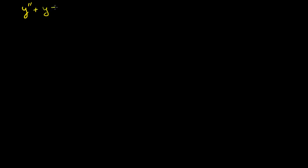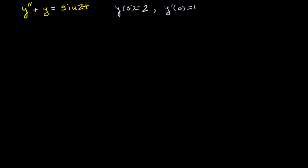So if we have the equation: the second derivative of y plus y is equal to sine of 2t. And we're given some initial conditions: y of 0 is equal to 2, and y prime of 0 is equal to 1.